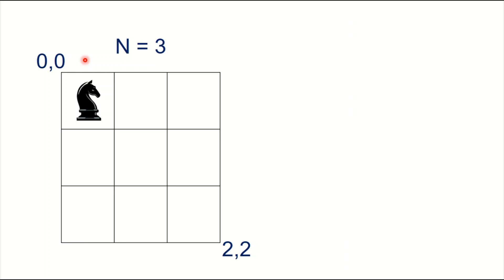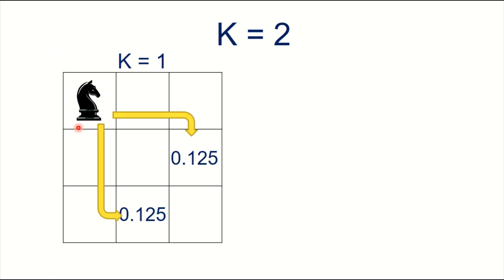Now, let us consider the board of size 3, that is n equal to 3. The top-left is indexed as 0, and I am considering the Knight is also positioned initially at this 0-index block. For k moves, let us find the probability of the Knight to be inside the chess board.